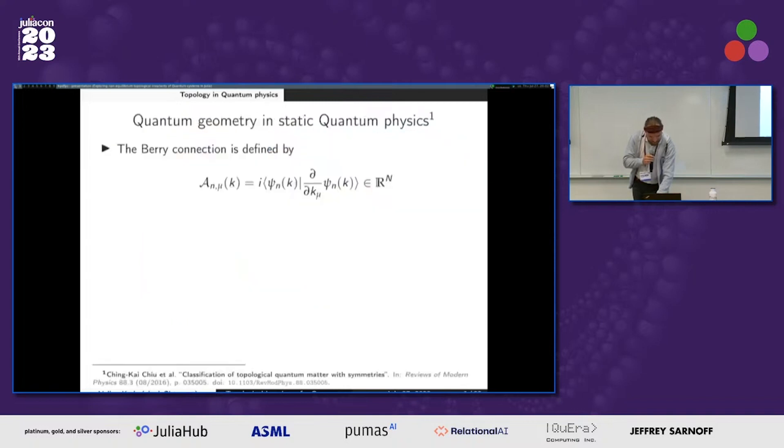Unfortunately, I cannot go in much detail, but in quantum physics, the curvature arises through the Berry connection, which is just the change of the wave function due to some parameters. So here I chose parameter k, but you can do whatever you want.